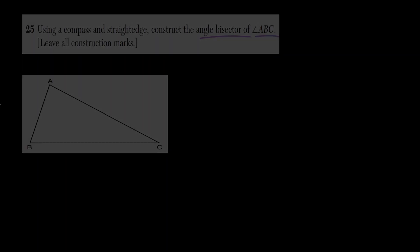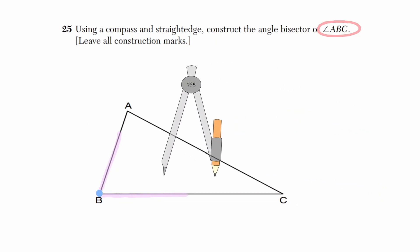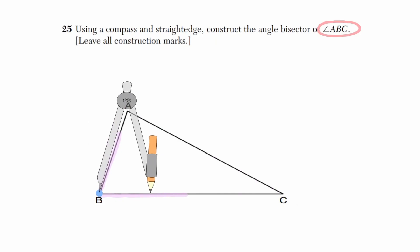Let's get our compass. The first thing we want to do is identify where angle ABC is, which we have here on the left-hand side. Now let's concentrate on the vertex of this angle, which is point B. Let's get our compass and place the metal point at that vertex.